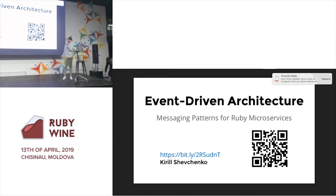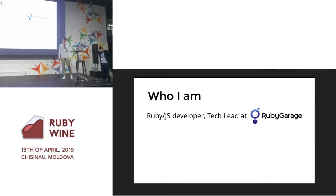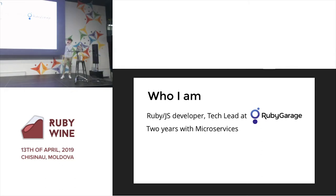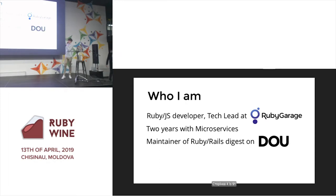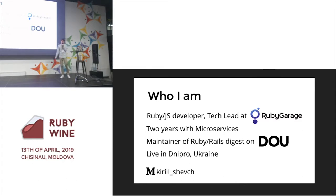I'm glad to be the first speaker at the first Ruby Wine conference. A few words about me: I'm a full-stack developer and technical lead at Ruby Garage. I've been working with microservices for around two years. I'm a maintainer of Ruby and Rails Digest on DOYOI, I live in Nibro, Ukraine, and in my free time I write technical posts on Medium and share gems and solutions on GitHub.